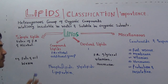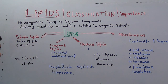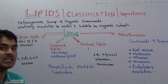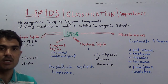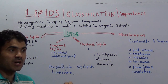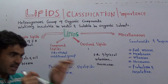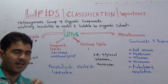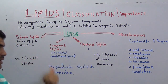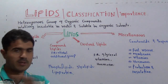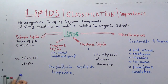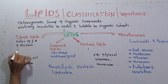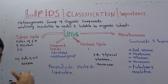Starting with simple lipids: a simple lipid is the ester of two types of molecules — one is the fatty acid and the second one is the alcohol. The combination of these two compounds, one being the fatty acid, which I write as FA, is a kind of acid compound, and when it is combined with an alcohol, they form a new compound.